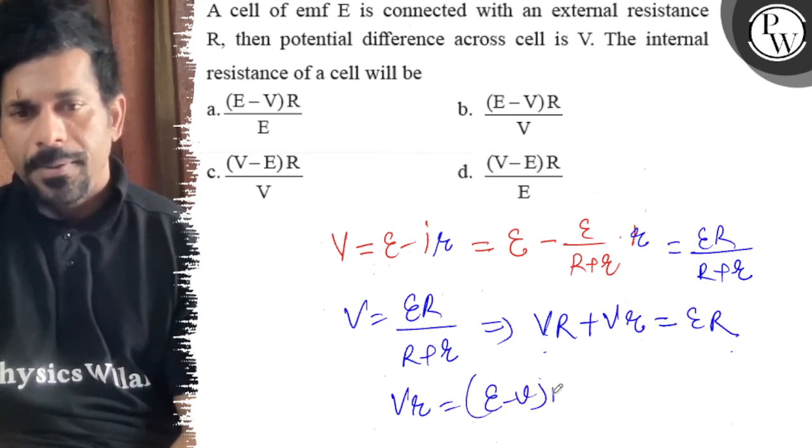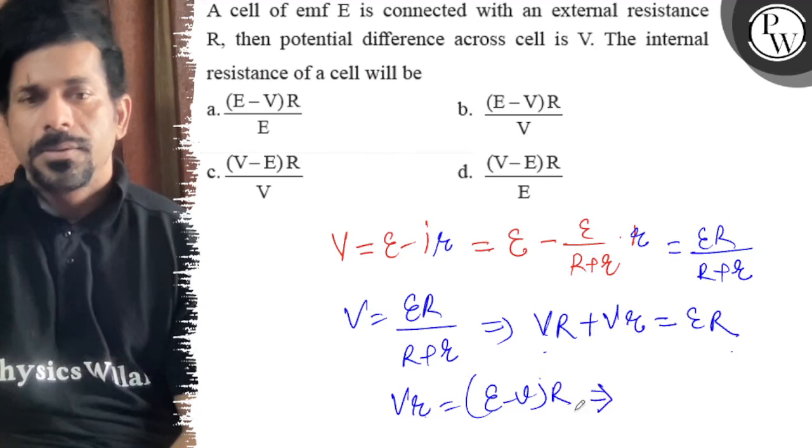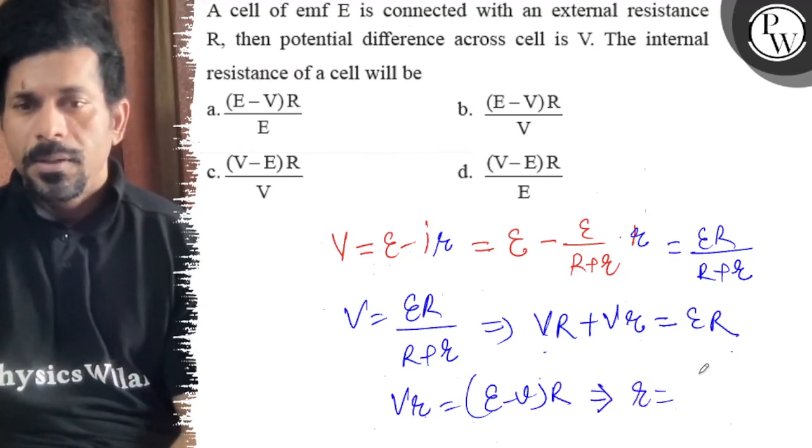And divide by V. So yeah, there you go. Small r is equal to what? E minus V into capital R divided by V.